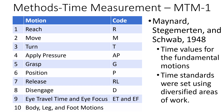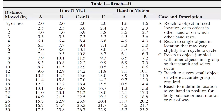This system divides work into ten different categories of motions or elements, and developed a standard time for each motion after studying many different kinds of work tasks. For example, this is the reach table — for reaching 12 inches at category A type of reach, the value is 9.6 TMU. The description covers what you're reaching for, such as an object in a fixed location or objects jumbled together.